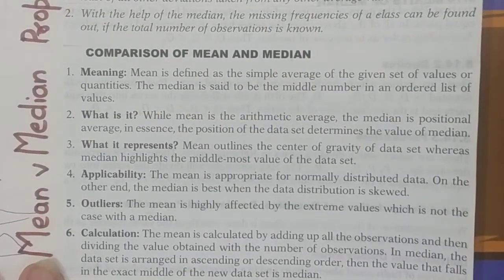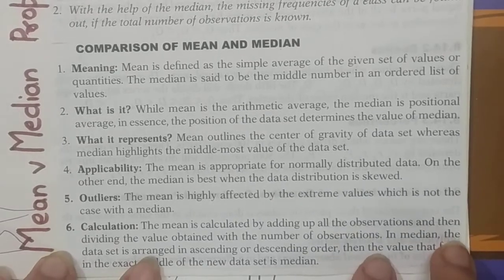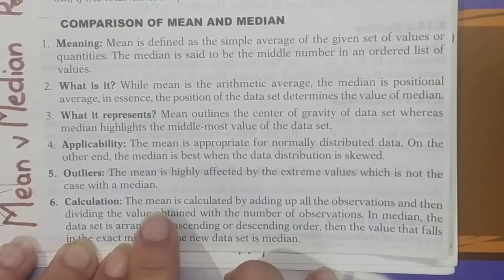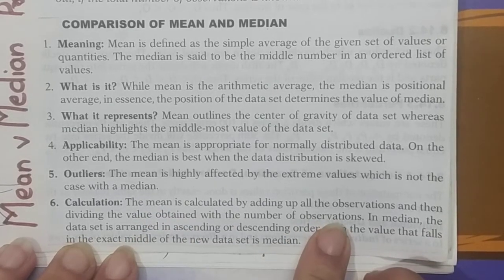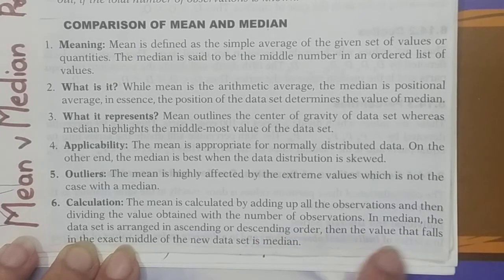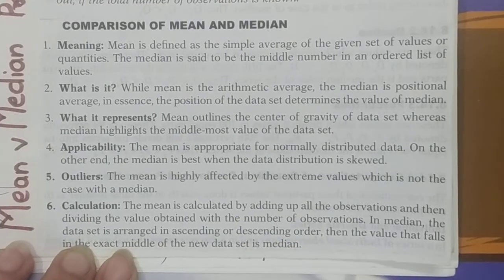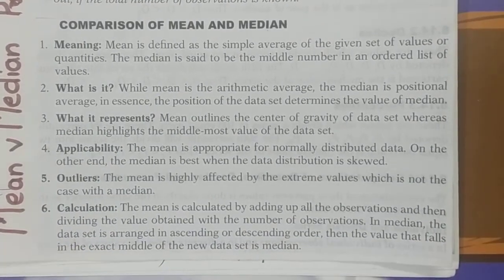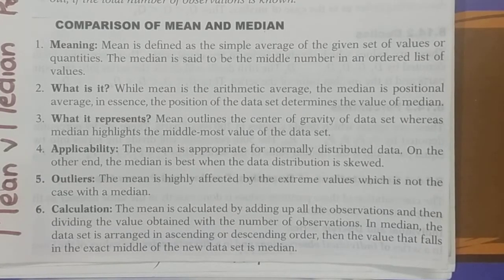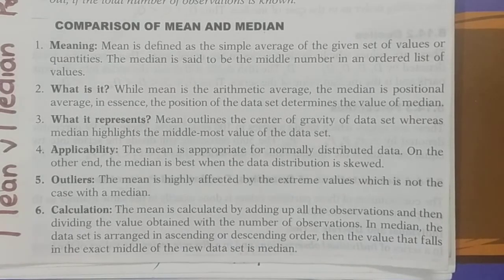Outliers: mean is highly affected by extreme values — very large or very small items — which distort the mean. Median is not affected this way. Regarding calculation: for the mean, we sum all observations and divide by the number of items. For the median, we arrange data in ascending or descending order and identify the center value. I hope you have a better understanding of median and the difference between mean and median. Watch the next video on quartiles, deciles, percentiles, and other partition values. Keep watching and stay connected.